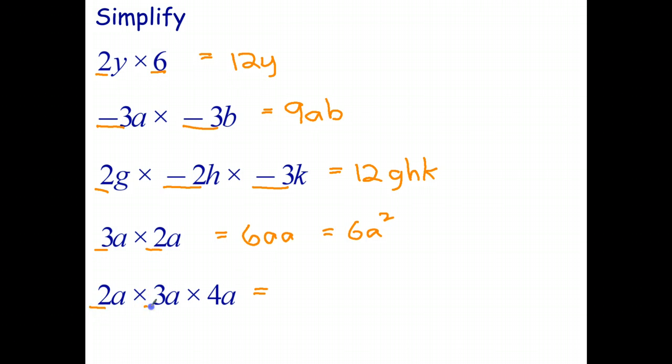And the last one. 2 times 3 is 6. Times 4 is 24. This time we have a times a times a. Well, that's going to be a to the power of 3. So as you can see, multiplying algebraic expressions is actually quite easy.